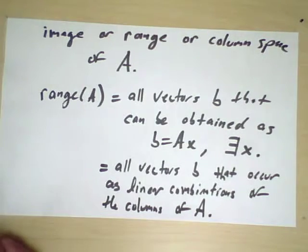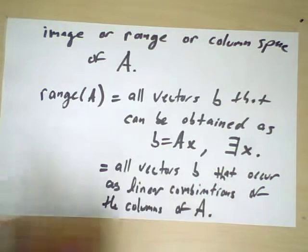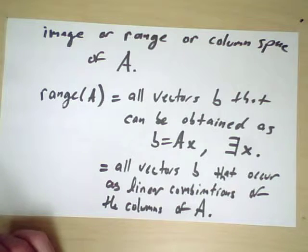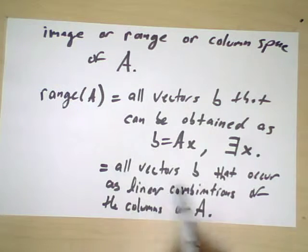So this is why the idea of an image or range and column space is the same thing. Because the operation of matrix multiplication, thinking of an input x being mapped to an output b, is actually the same thing as asking if I choose different coefficients x to build a linear combination of the columns of the matrix, what can I possibly get?